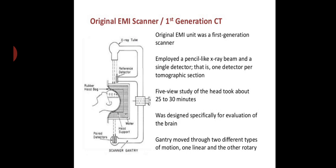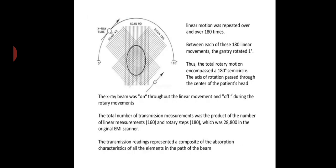The gantry moved through two different types of motion: one linear and other rotatory. Linear motion was repeated over and over 180 times. Between each of these 180 linear movements, the gantry rotated one degree. Thus, the total rotatory motion encompassed a 180 degree semicircle. The axis of rotation passed through the center of the patient's head. The x-ray beam was on throughout the linear movements and off during the rotatory movements. The total number of transmission measurements was the product of the number of linear measurements, that is 160, and rotatory steps, that is 180, which was 28,800 in the original EMI scanner.